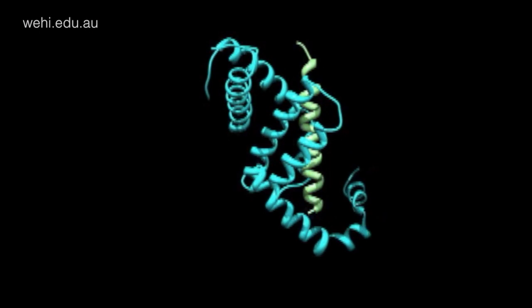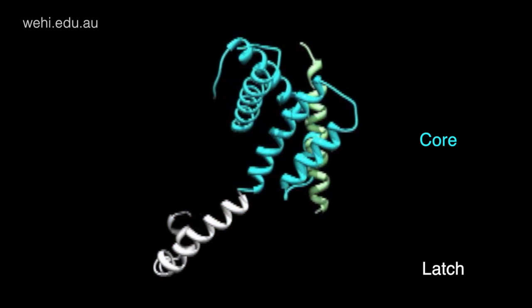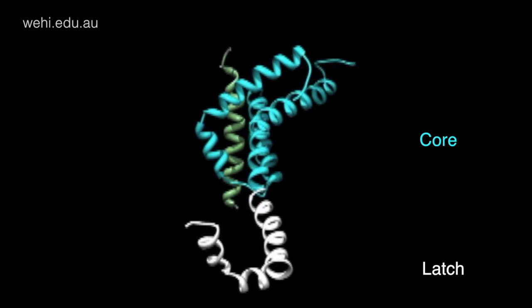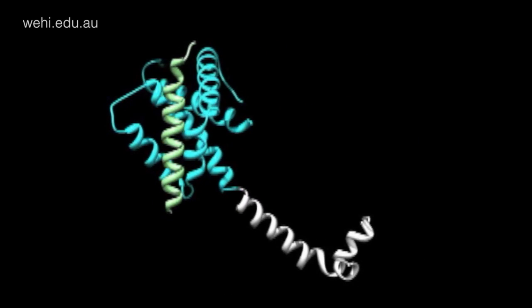What happens is that Bax disentangles into these two domains, the core domain and the latch domain. The core domain can then go on and form larger units, and those larger units integrate into the membrane. Then that core domain can go on to do the killing of the cell.